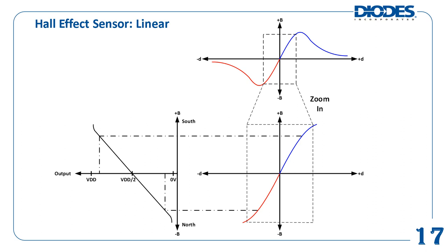An application example that can use the linear Hall Effect sensor is in valve position sensing. Usually a two-pole ring magnet is used in conjunction with a linear Hall Effect sensor. As the valve opens or closes, it rotates the attached ring magnet. The rotation of the ring magnet changes the magnetic flux density detected by the linear Hall Effect sensor, which outputs a voltage proportional to the flux density. This voltage is fed back to a control system so it knows precisely how opened or closed the valve is, allowing the system to more accurately regulate the amount of substance flowing past the valve.